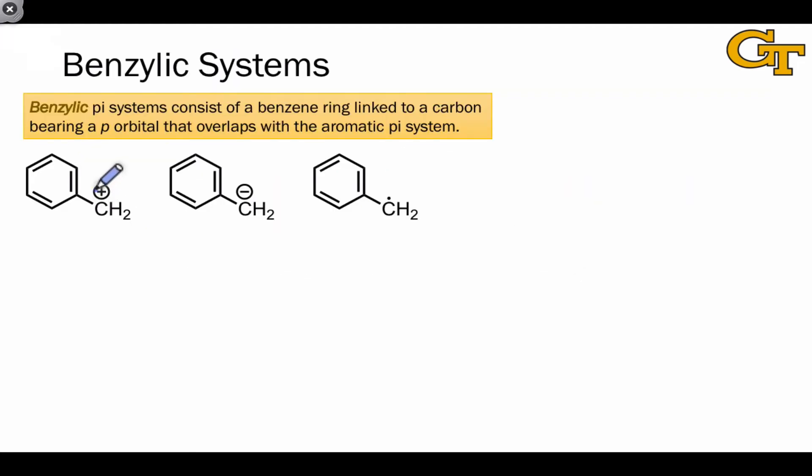Benzylic pi systems involve either a cationic carbon, anionic carbon, or radical carbon directly connected to a benzene ring, so that the charge or radical character is delocalized over the benzene pi system. Because of the resonance delocalization of charge or radical character, these species are relatively stable, and they pop up often as reactive intermediates in organic reactions.